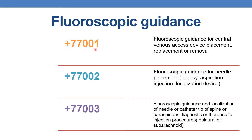The first fluoroscopic guidance code is plus 77001, which deals with fluoroscopic guidance for central venous access device placement, replacement, or removal. The next code is plus 77002, which deals with fluoroscopic guidance for needle placement — that is, biopsy, aspiration, injection, or localization of device. The next is plus 77003: fluoroscopic guidance and localization of needle or catheter tip for spine or paraspinous diagnostic or therapeutic injection procedures, such as epidural or subarachnoid.